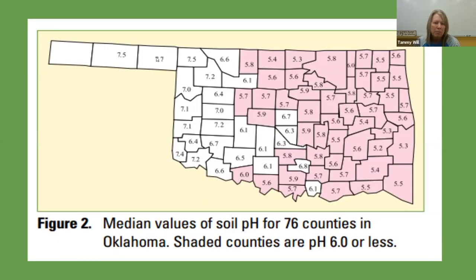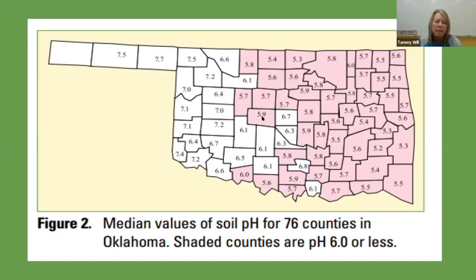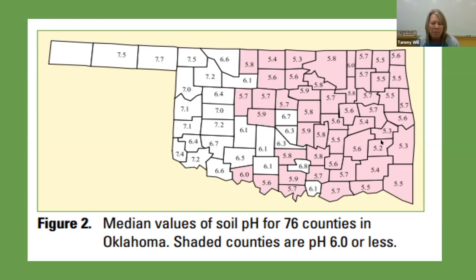With permission, I borrowed this map about three years ago from a professor at OSU. This is actually real-time data and we talk about that in class. This is the average pH values of the counties in our state. They did this as a research project in the agronomy department at OSU, and this is the map they came out with.